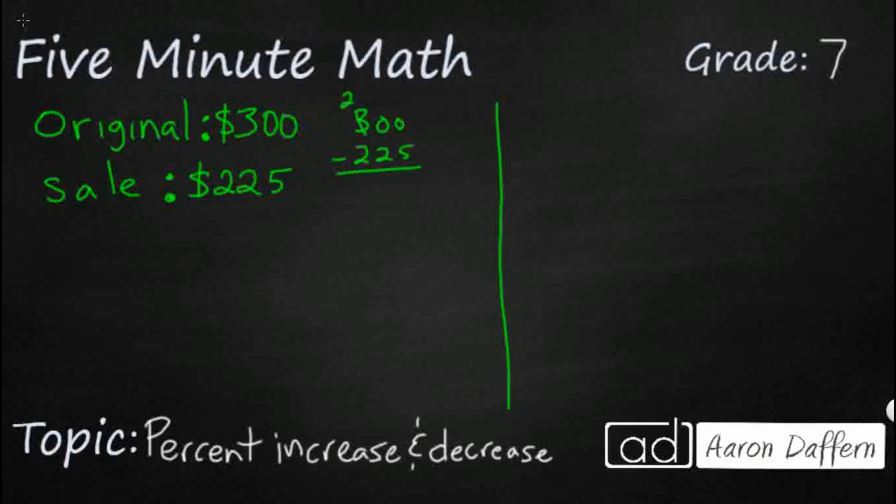We're going to do a little math here, do a little regrouping. So that's $75 off. $75, and what we do is we say how much money is reduced or how much money is changed, $75, and you turn it into a fraction.